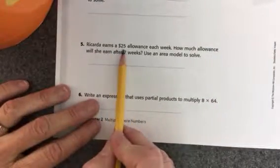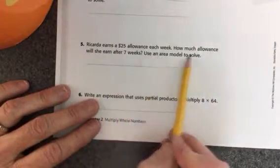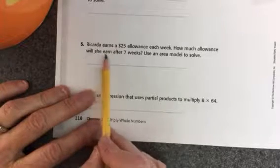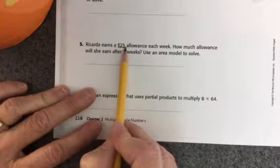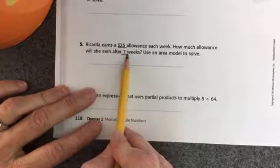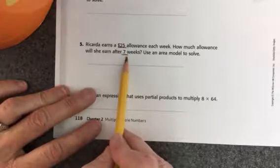Ricardo earns $25 allowance each week. How much allowance will she earn? Oh, Ricardo, sorry. How much will he earn after seven weeks? I know that he earns $25, and I know that I'm going to figure out how much he earns for seven weeks. This is equal groups, so I will multiply.